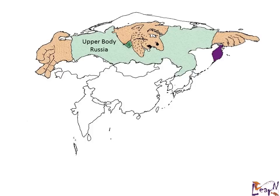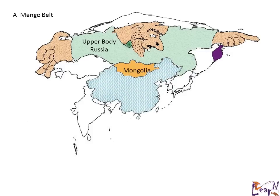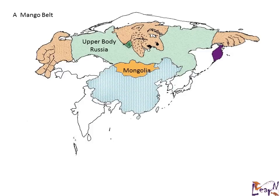Now we come to the mango belt — he wears a mango belt. That's a weird name for a belt, but that is exactly the idea. And here comes Mongolia. Let us move to the lower body now, and you may have guessed that this is China.